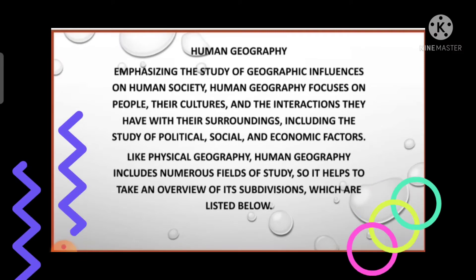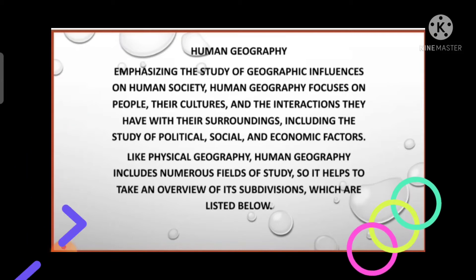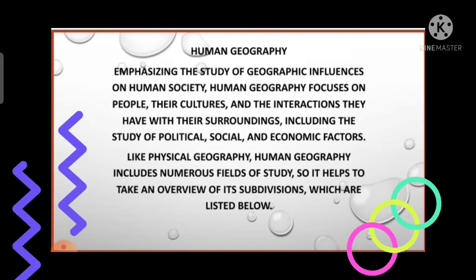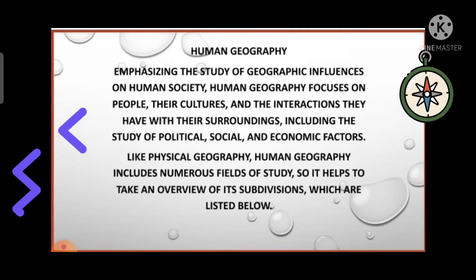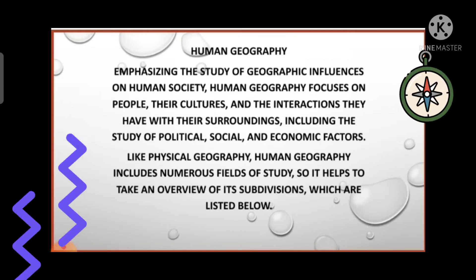Under economic geography we can further identify geography related to agriculture, industry, transport, trade, infrastructure, and services. Agriculture, industry, tourism, trade, transport, and services — all these broad categories are studied under economic geography.